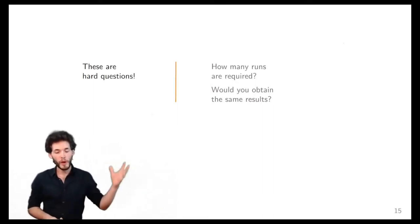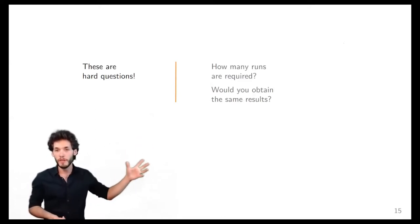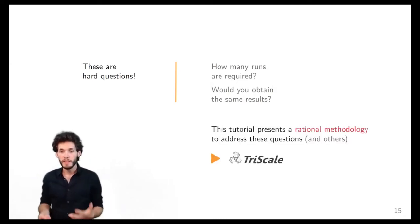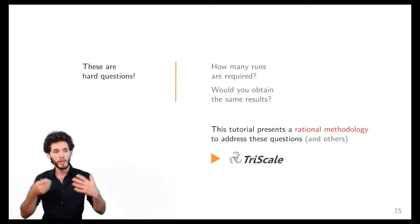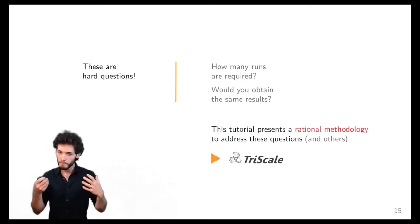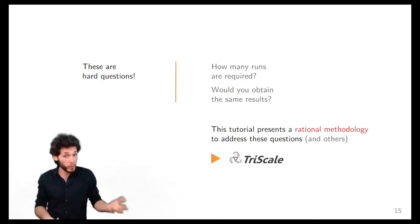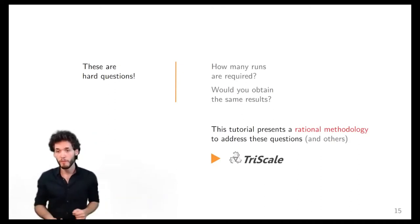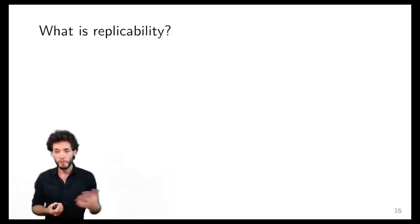Those two questions — how many runs, and would you expect to obtain the same result — are hard questions. The goal of this tutorial is to show you one method. I'm not claiming it's the only one or the best one, but it's one method we found to address those two questions. First thing first: I promised I'd define what replicability is, so let's have a look.